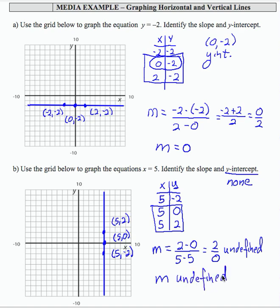So here are the two special cases, horizontal line and vertical line. You're going to want to remember the characteristics of these lines in terms of the slopes, the y-intercepts, the equations, and how to graph them.